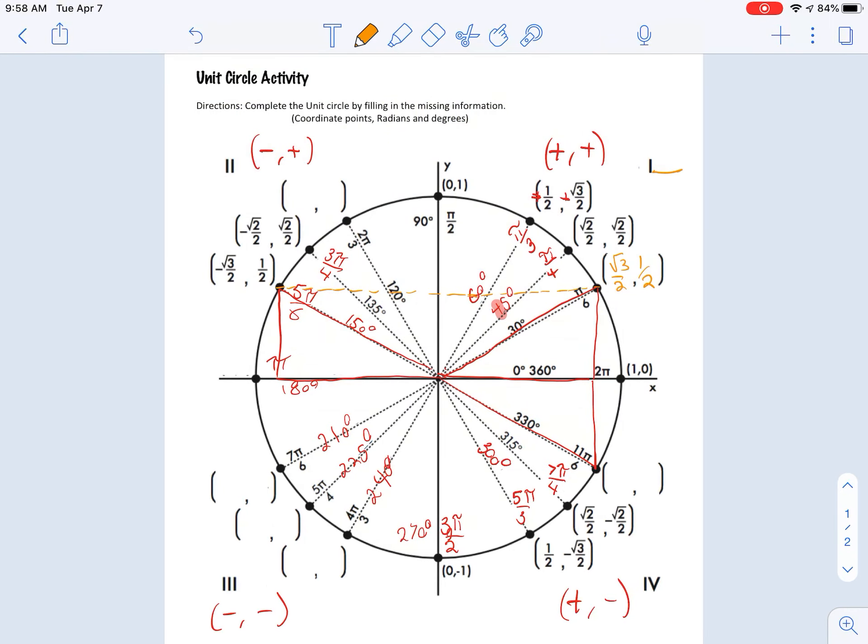Once again, this is quadrant 1, 2, 3, and 4. So we're going to go ahead and take this point. We're going to go down. We're going to draw another triangle. And you guys are going to see all these triangles are actually going to be congruent to one another. They will have different signs for where they are in, what quadrant they are in.